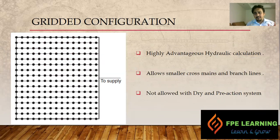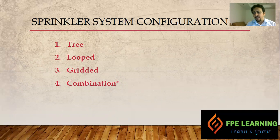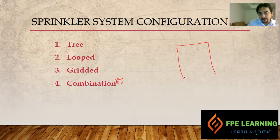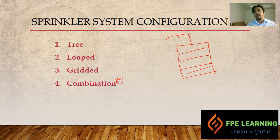The choice between tree, looped, and gridded configurations is based on available water supply versus system demand. It also depends on the project cost and the type of layout available at the site. A combination of tree, looped, and gridded is also possible — for example, a gridded main area with a tree branch for two or three sprinklers. Ultimately, the decision is based on economical cost and the site layout needed to serve the occupancy.